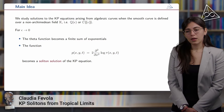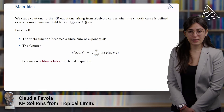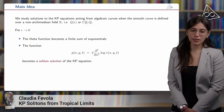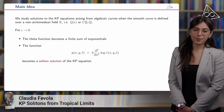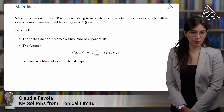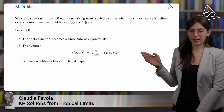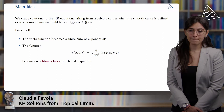The main idea for our work is to study a solution to the KP equation arising from algebraic curves in the case where the smooth curve is defined over a non-Archimedean field k, such as a finite extension of the rational numbers or the field of Puiseux series. What we observe is that when epsilon goes to zero, the theta function becomes a finite sum of exponentials — like the sum in the tau function seen in the previous slides — and the function p defined in this way becomes exactly a soliton solution to the KP equation.